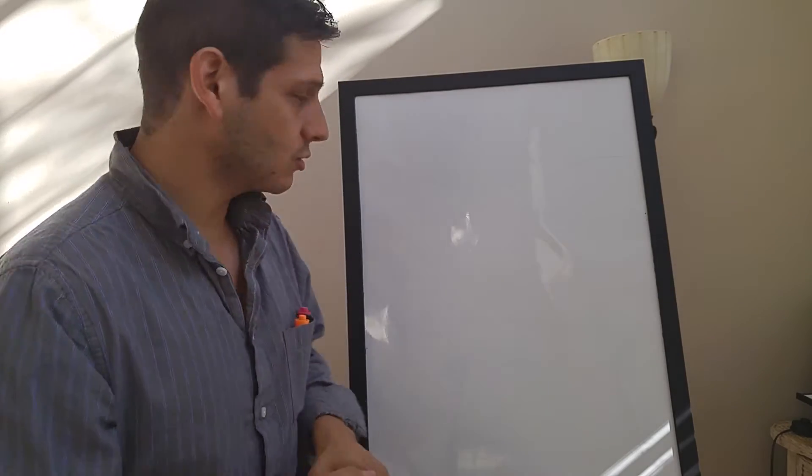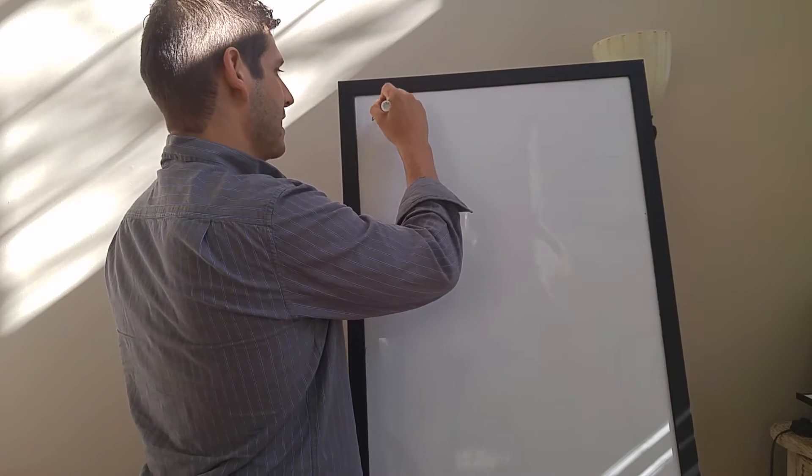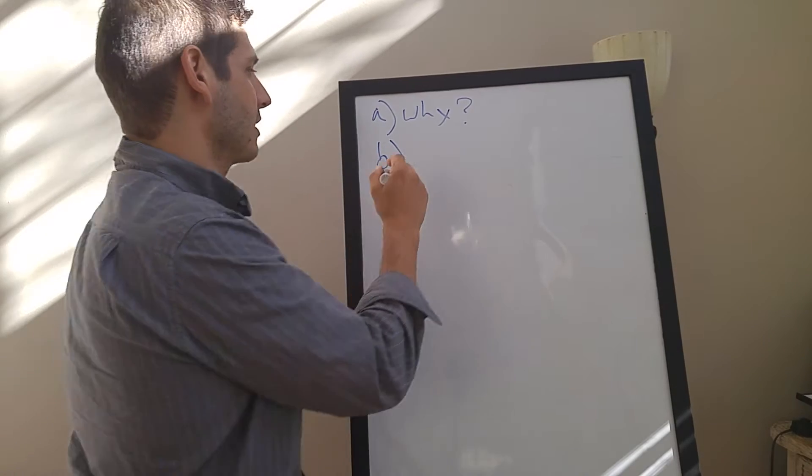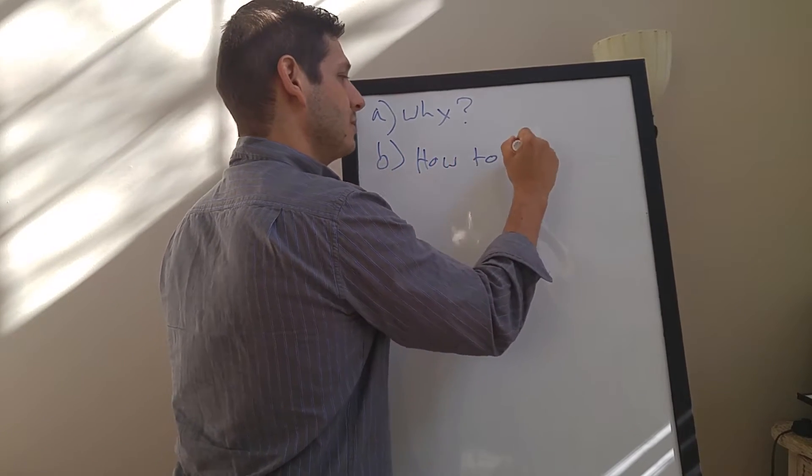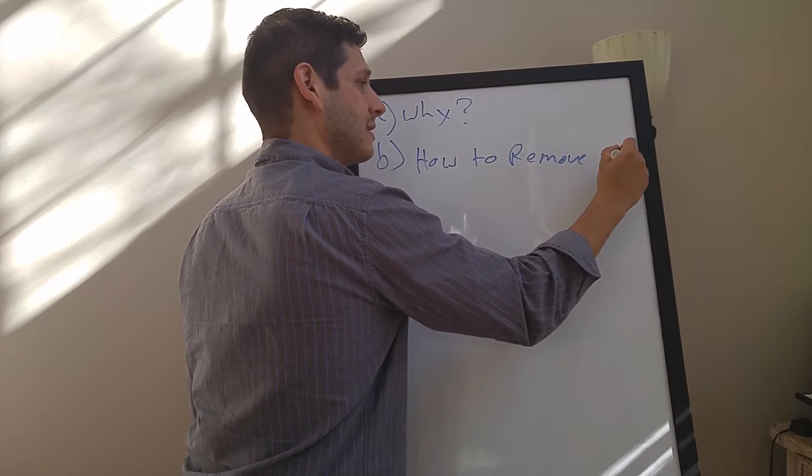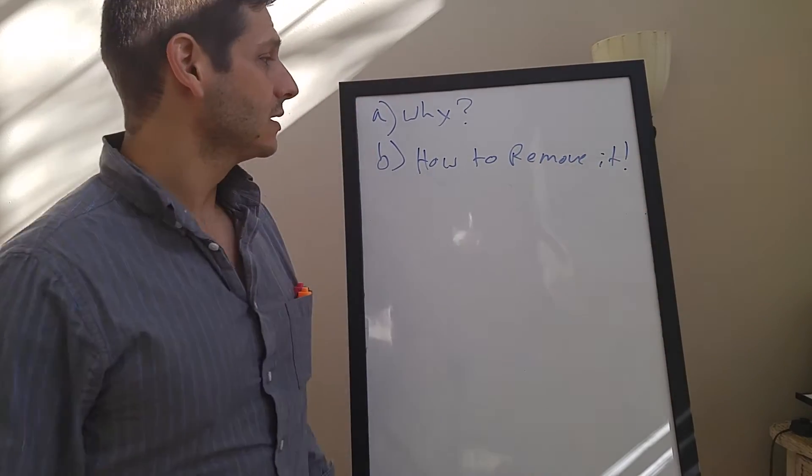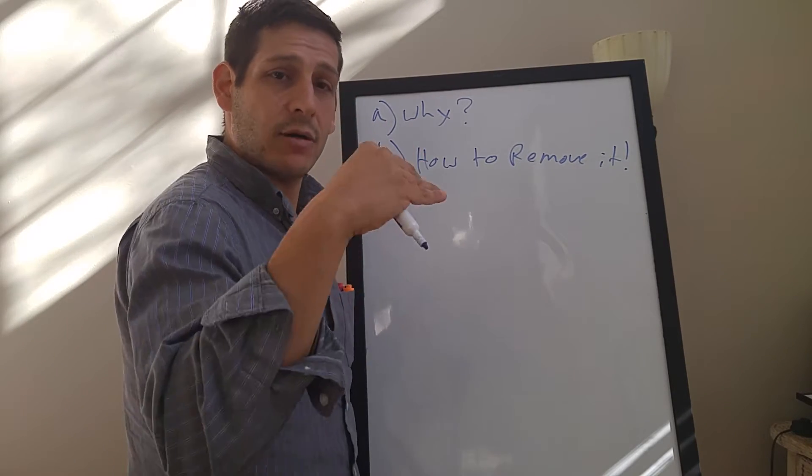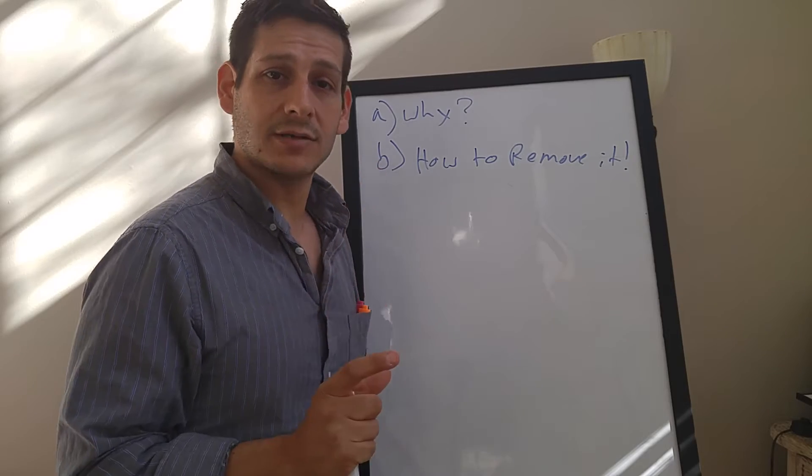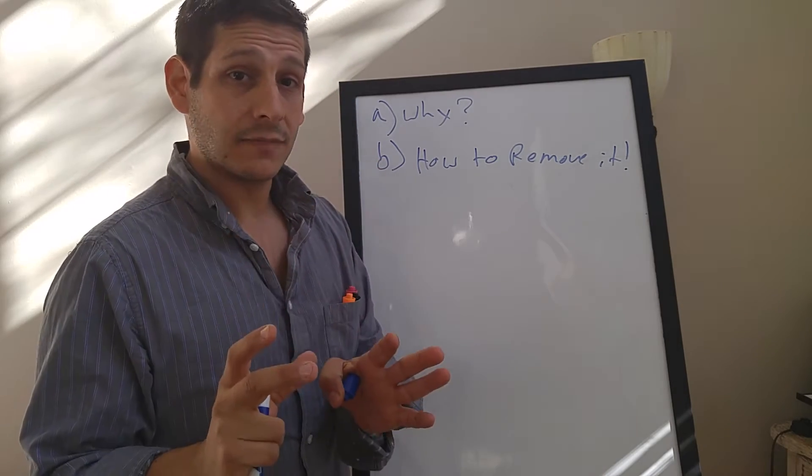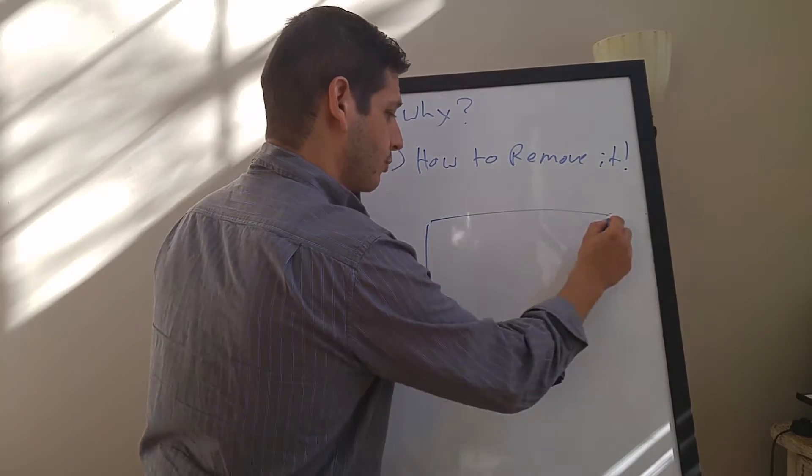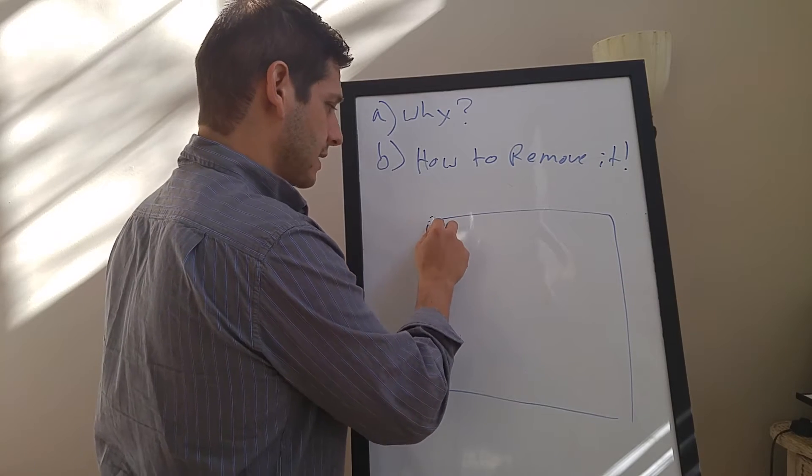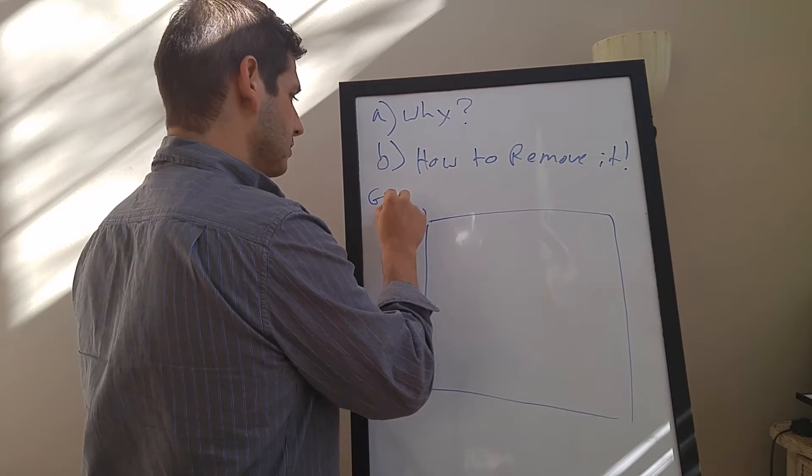So they had a question which was, why is there horizontal banding when you are collecting your GPR data? And then the sort of part B of their question is how do you remove it, what kind of filter can you apply to remove it, and how does that filter work? And so we'll start with A, so horizontal banding, A is going to be why, and then B will be how to remove it.